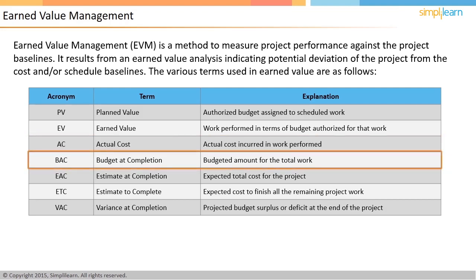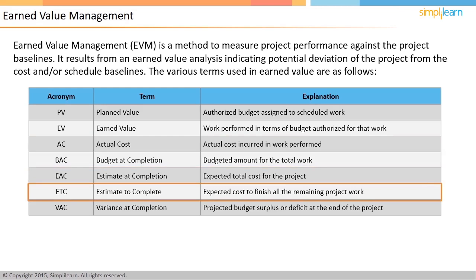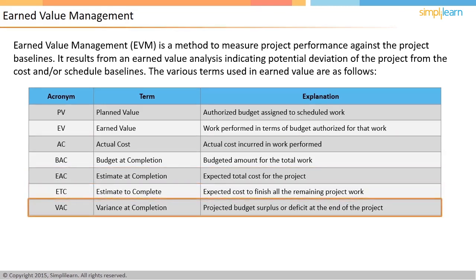Budget at completion is the budgeted amount for the total work. Estimate at completion is the expected total cost for the project. Estimate to complete is the expected cost to finish all the remaining project work. Variance at completion is the projected budget surplus or deficit at the end of the project. All these parameters are measured in terms of cost.